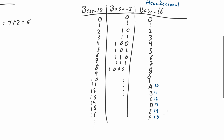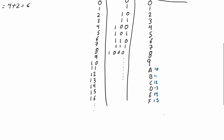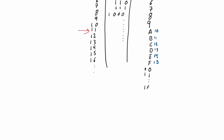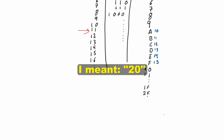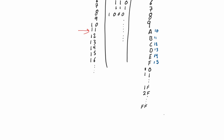Just like before, once we get to F — which is 15 in decimal — in order to go to 16 in hexadecimal we reset the right side and start a new digit on the left. Then we continue to count: 1-1, 1-2, and so on all the way to 1-F, which is equivalent to 31, and continuing all the way to F-F, after which we get 1-0-0.